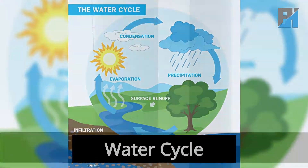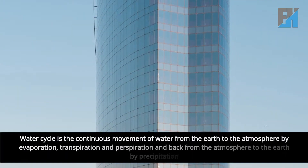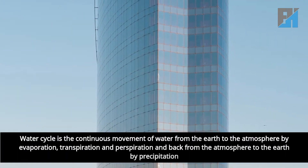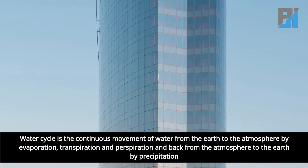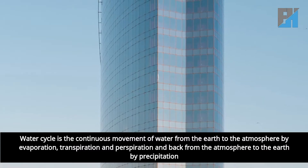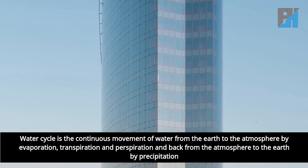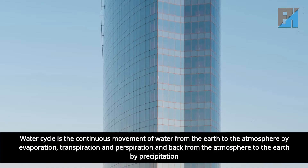Water cycle. The water cycle is the continuous movement of water from the Earth to the atmosphere by evaporation, transpiration and perspiration, and back from the atmosphere to the Earth by precipitation.